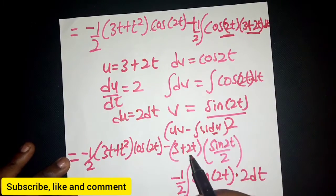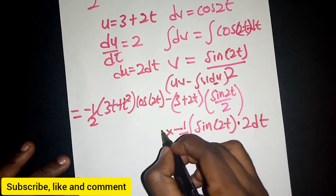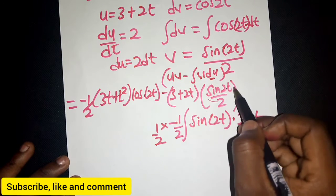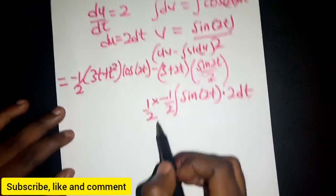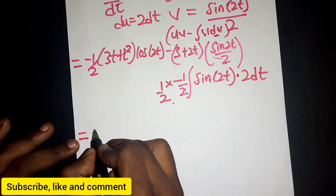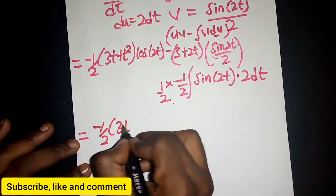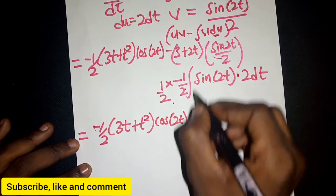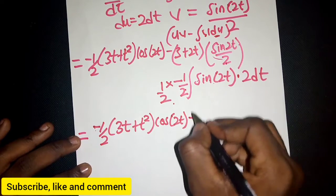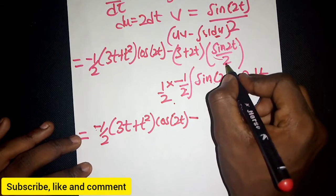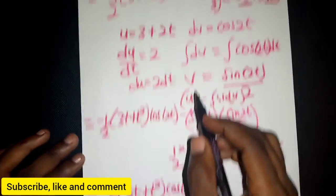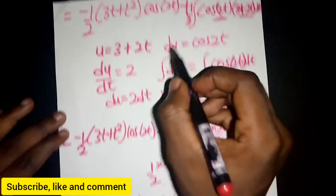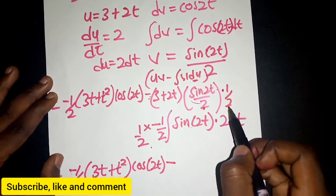There is already ½ outside from the previous step, so multiplying through we get ¼ for the (3 + 2t)·sine(2t) term. The 2 from du cancels with the ½ from v, leaving -½ times the integral of sine(2t) dt.